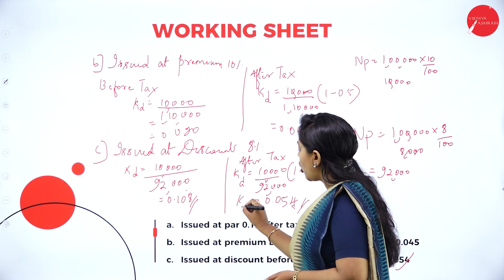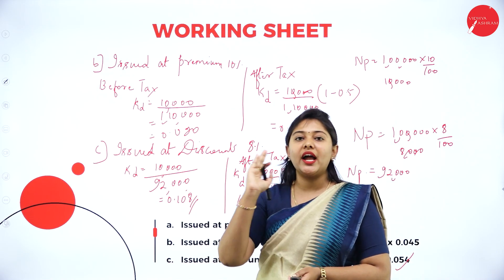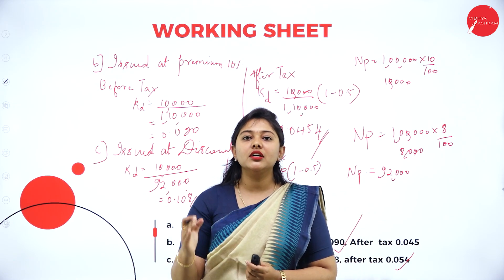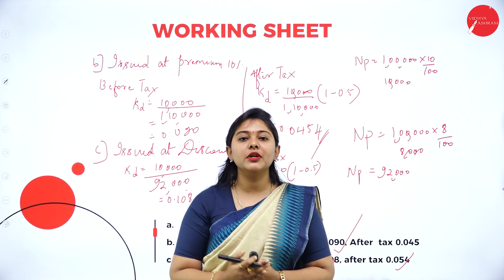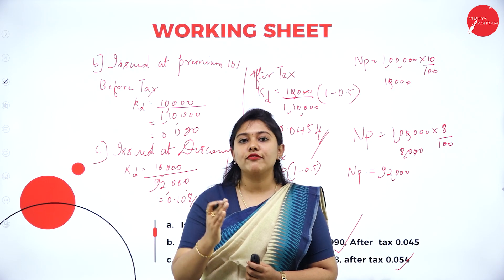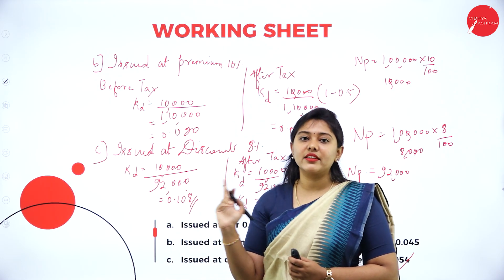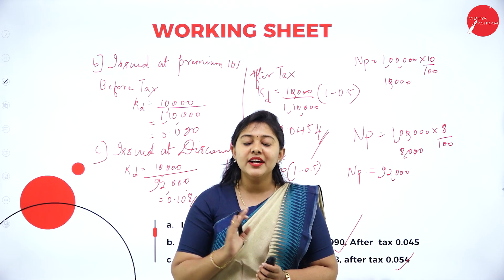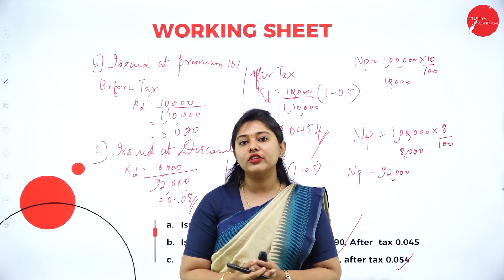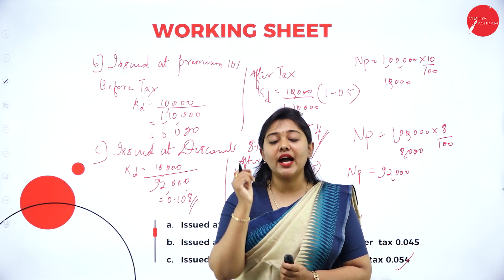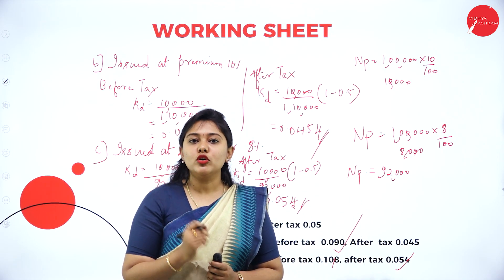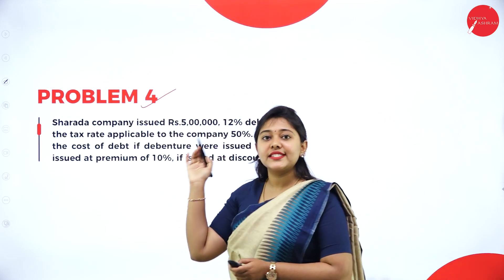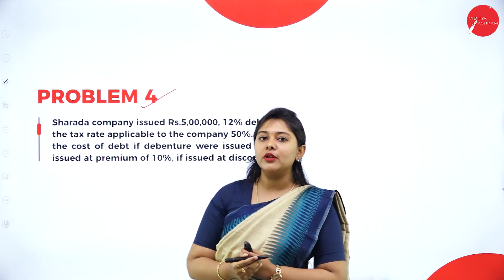This is how you calculate the cost of debt issued at par, at a premium, and at a discount for irredeemable debt. Irredeemable means that during the lifetime of the company, the debenture amount need not be repaid. But once the company is closed, they have to return the debenture money. In your examination, if a number of years is given, it is a redeemable problem, and you must use the redeemable formula.